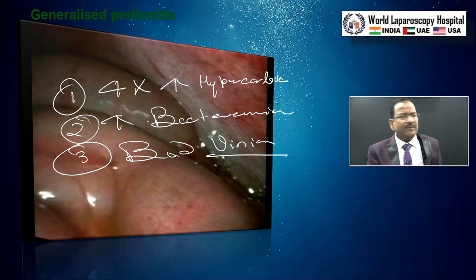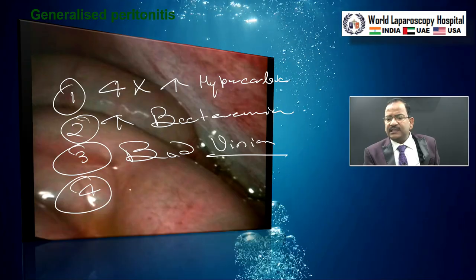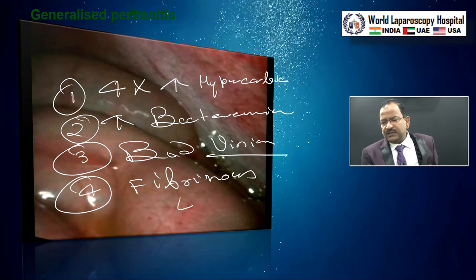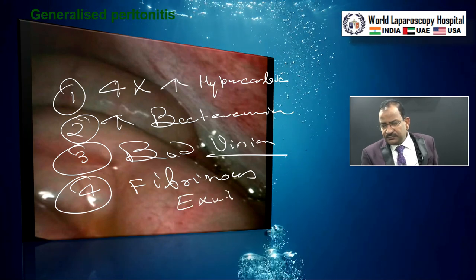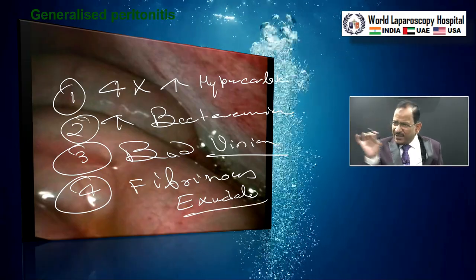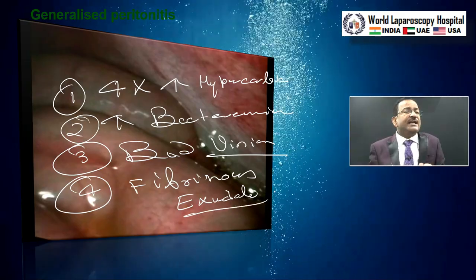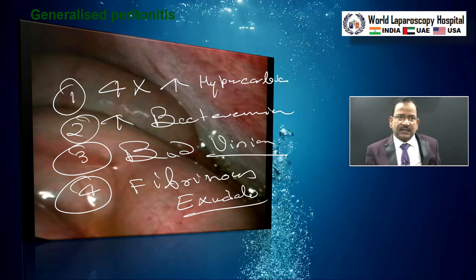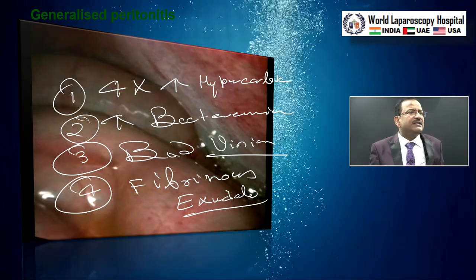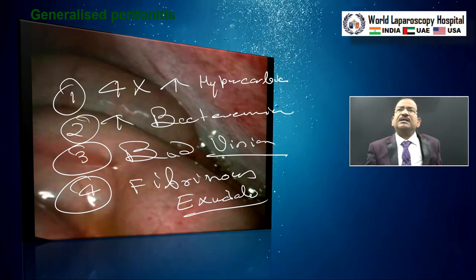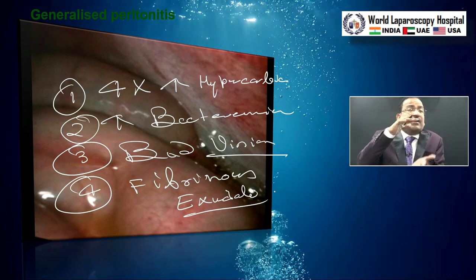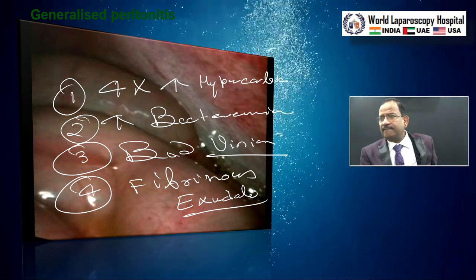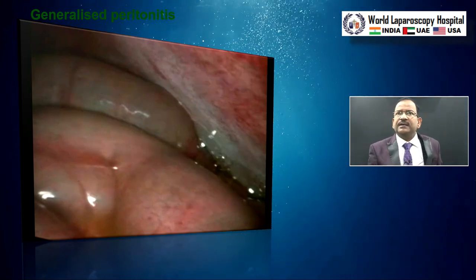The fourth problem is fibrinous exudates — just like a curled deposit. You might have seen after generalized peritonitis those white, white exudates which create interbowel adhesions, bus pockets. If you try by laparoscopy to clean those fibrinous exudates, there will be trauma. Sometimes these fibrinous exudates are adhering the bowel to the abdominal wall, and during trocar placement you will perforate. That is why generalized peritonitis is a contraindication for laparoscopy.